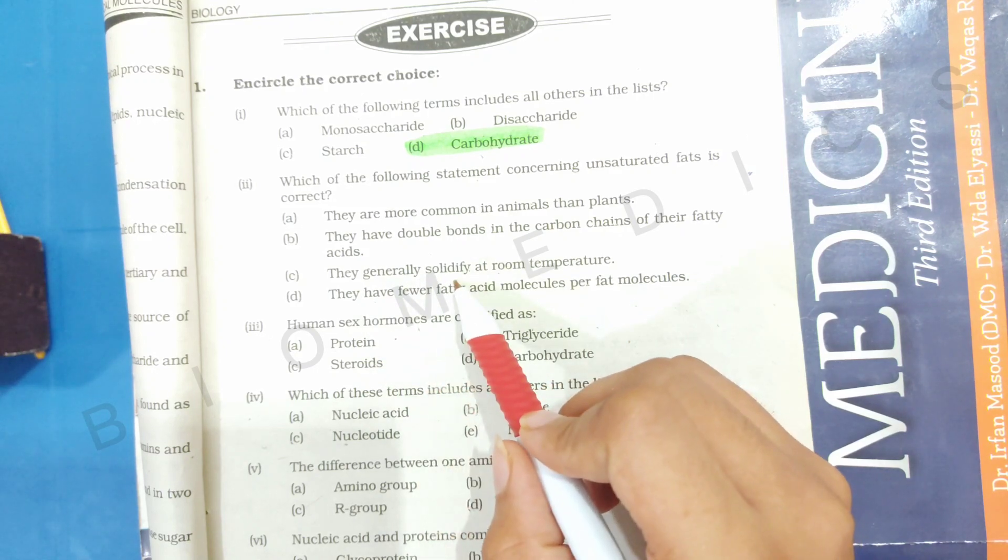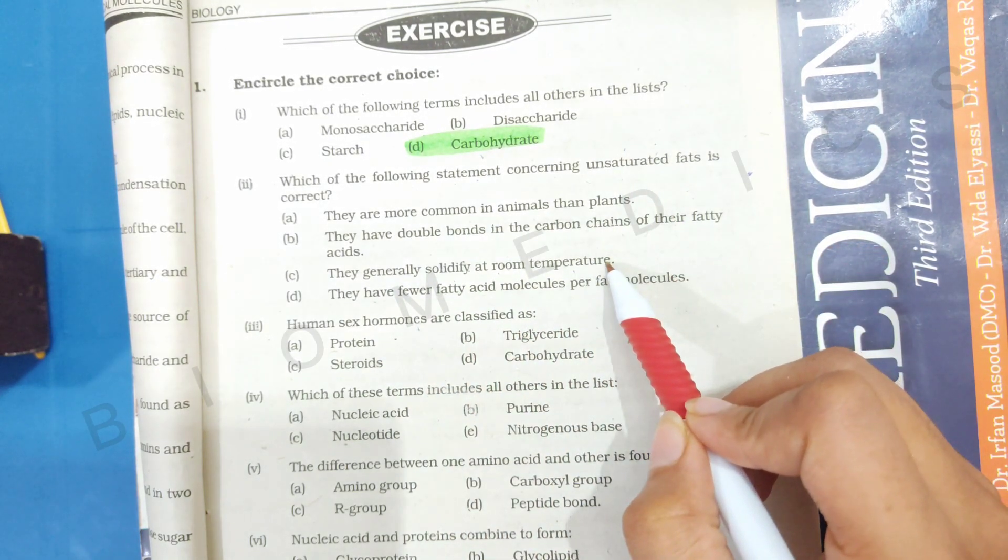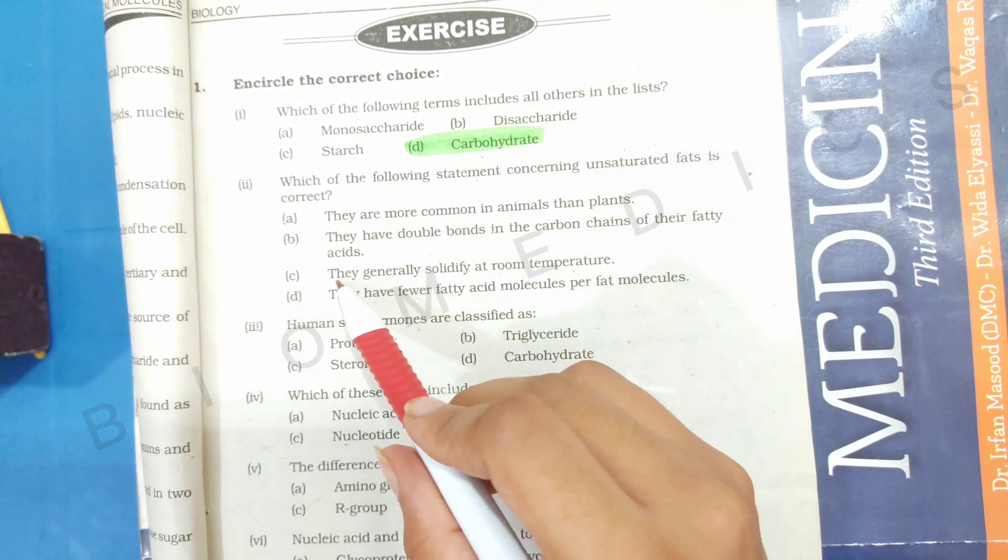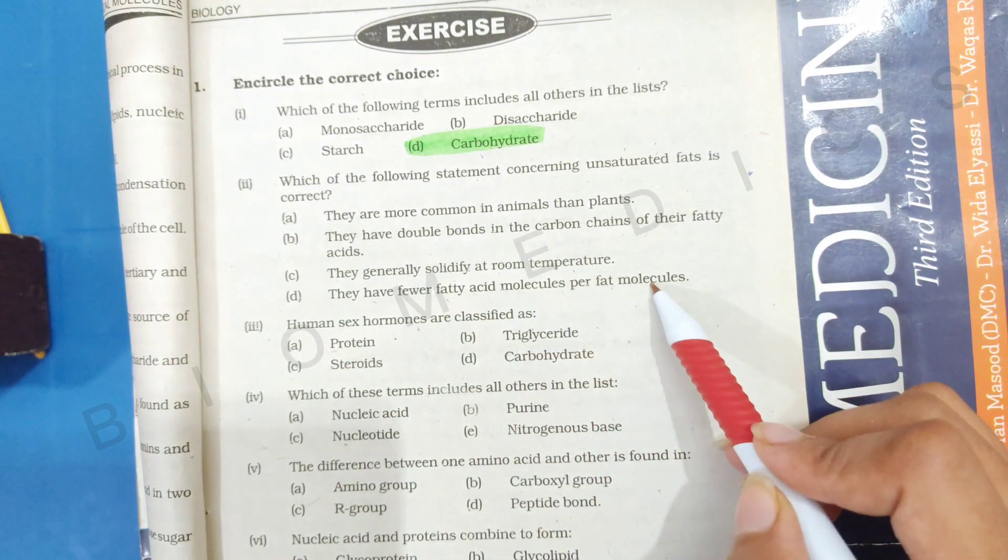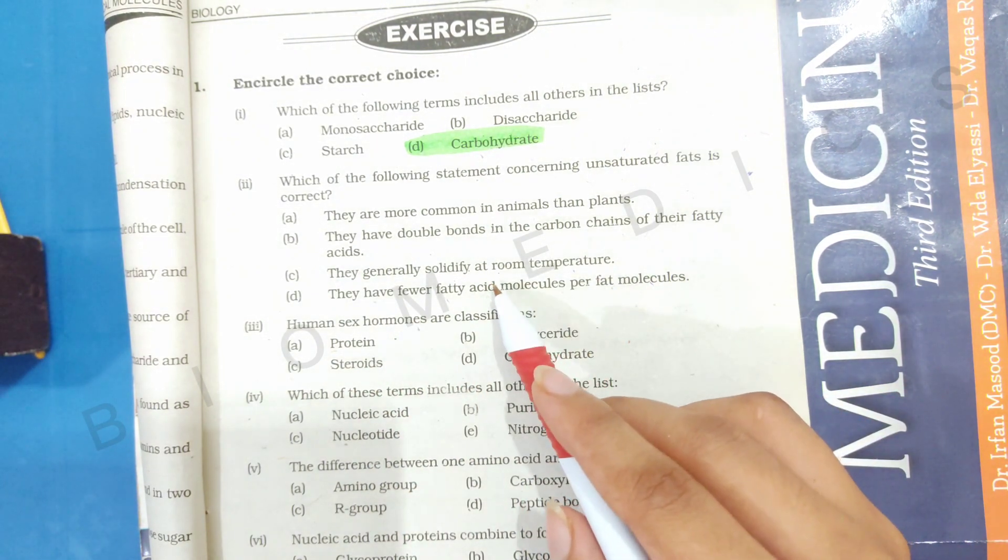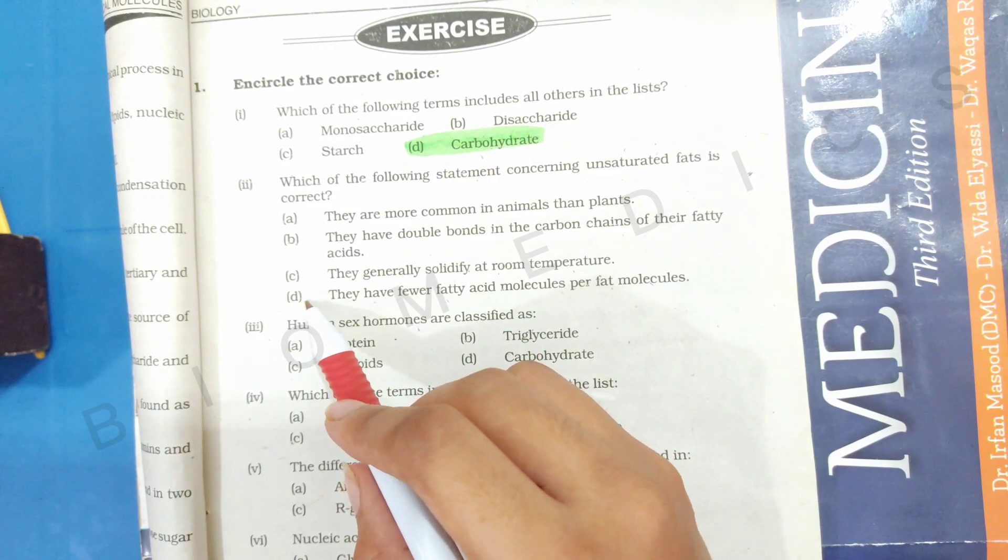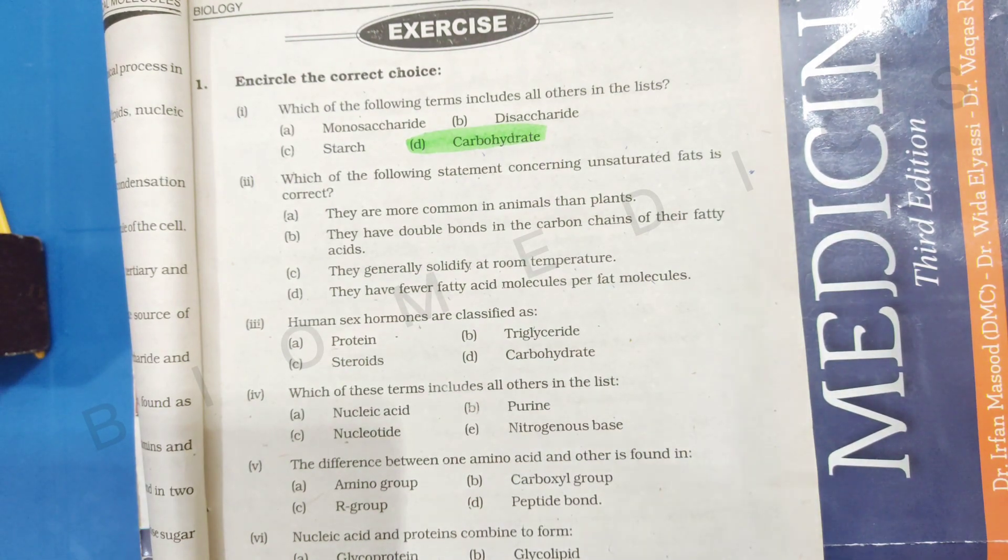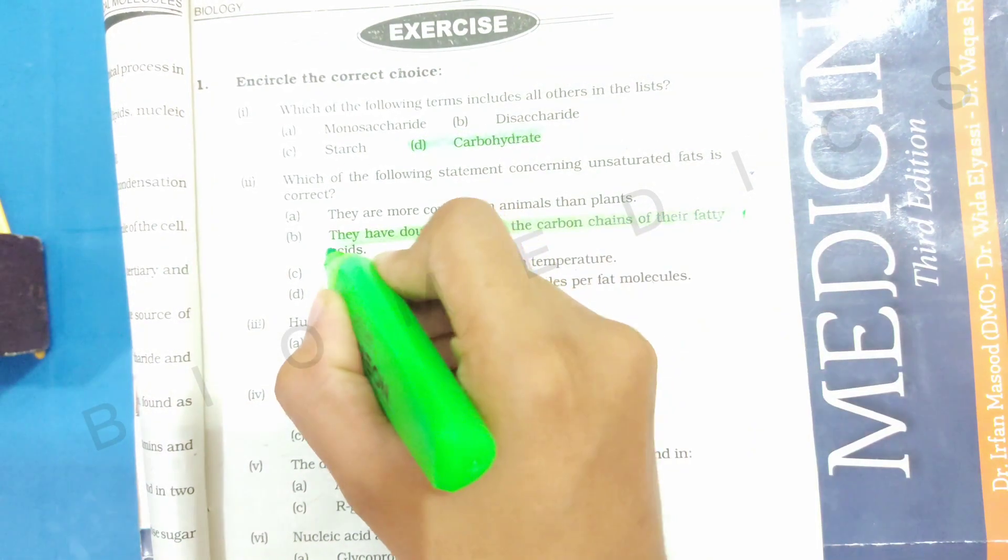They are generally solidified at room temperature. Unsaturated fatty acids are liquid at room temperature, meaning they are oils. And these things are wrong. They have fewer fatty acids molecules per fat molecules. So they have many fatty acid molecules per fat molecule. So the right option is option number B. Your correct option will be: they have double bonds in the carbon chains of their fatty acids.